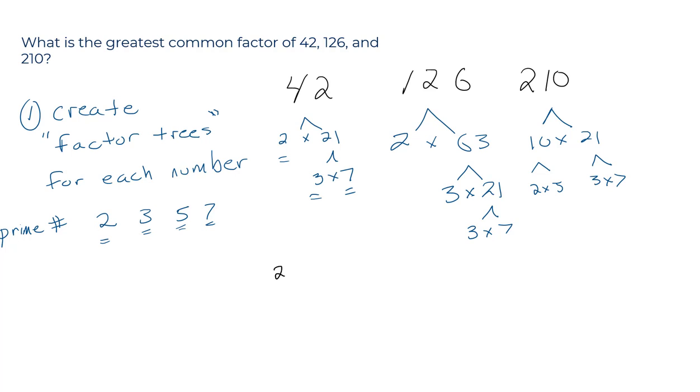So 42 is 2 times 3 times 7. 126 is 2 times 3 times 3, again times 7. And 210, 2 times, we'll do these in order from low to high, 2 times 3 times 5 times 7.